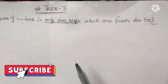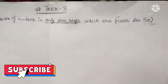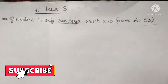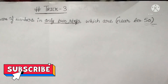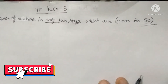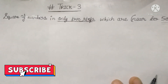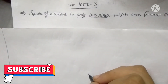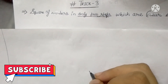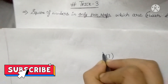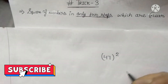Near to 50 means it can be 47, 48, 55, 58, 53 — anything which is near to 50. So let's take an example to make it more clear. Suppose we have to find the square of 47.